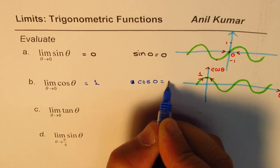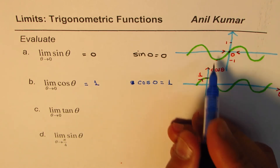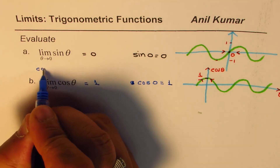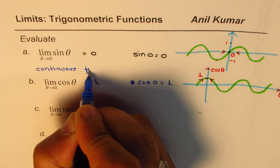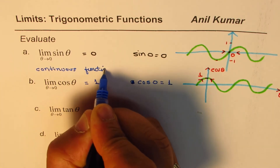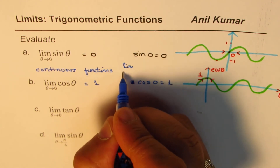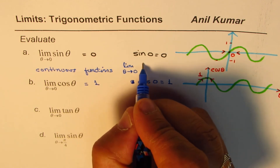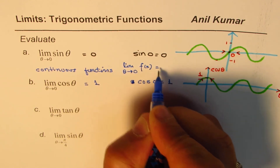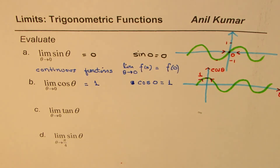We can write cosine of 0 equals 1. Since both sine and cosine are continuous functions, we find that the limit as θ approaches 0 equals the value of the function at 0.